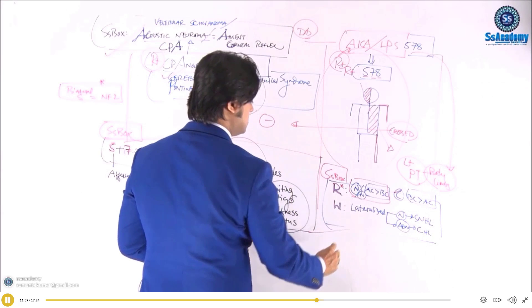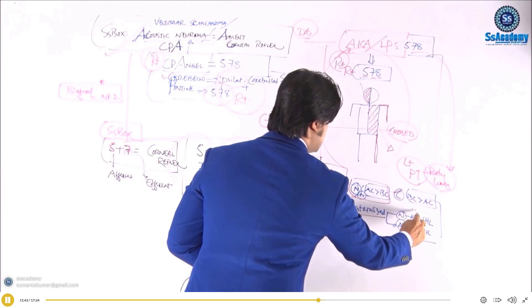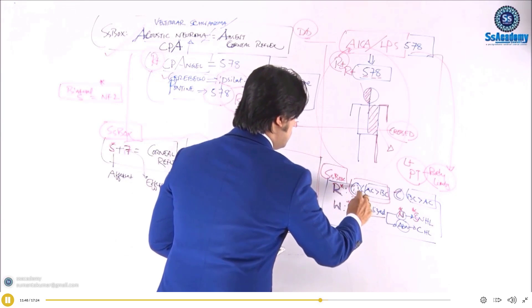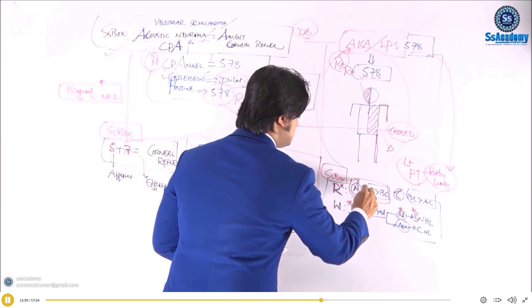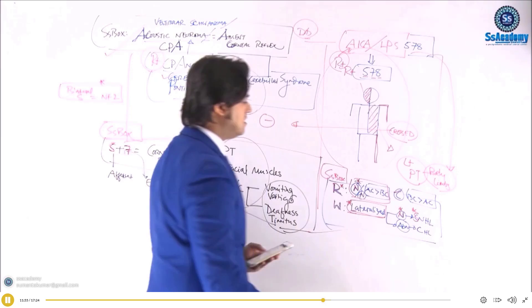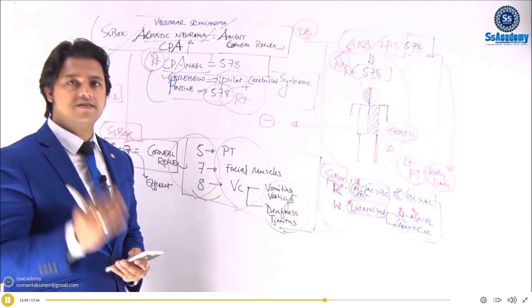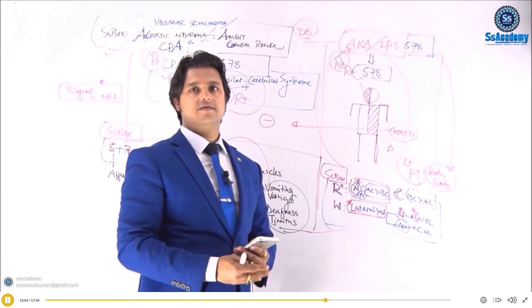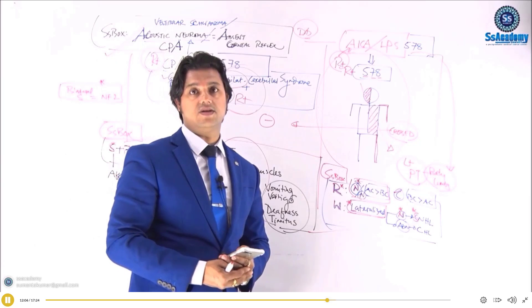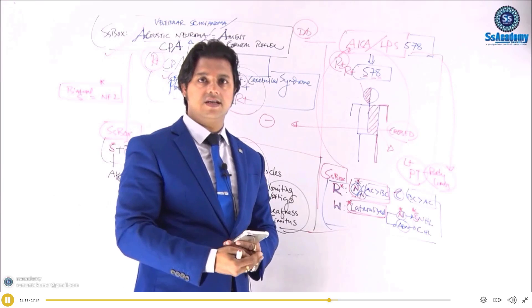In the Weber test, remember: in sensorineural hearing loss, sound lateralizes to the normal side. Lateralized to normal equals sensorineural hearing loss. N for normal in the Rinne test — AC greater than BC — and N for nerve deafness. Both give the same Rinne result. Lateralized to normal in Weber means sensorineural hearing loss.